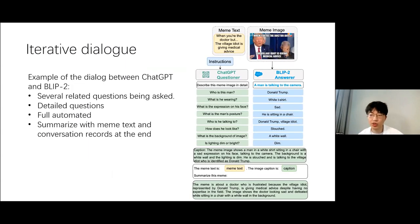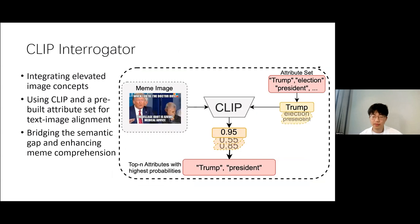Here is an example of a dialogue between ChatGPT and BLIP2. BLIP2 initially provides a detailed description. However, through subsequent interactions, the model gathers additional information about the image, allowing the system to eventually generate an informative caption by considering multiple aspects. To follow previous studies, we incorporate attributes as an elevated image concept to encompass harmful elements and relevant contextual information. To identify the top-K attributes, we combine CLIP with BLIP to align the prompt with a specific image, using CLIP interrogator to calculate cosine similarity scores between an image and each attribute in the collective set.